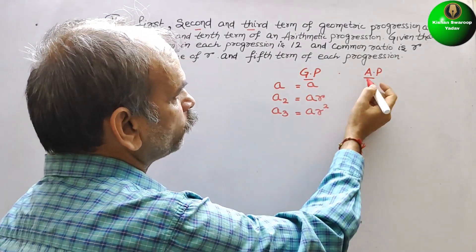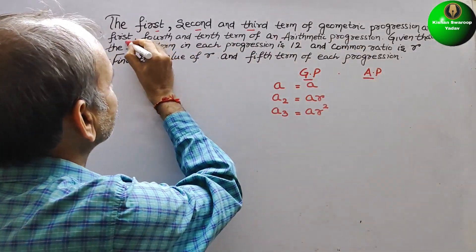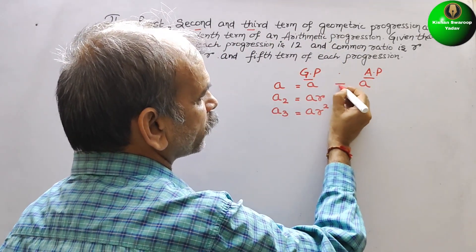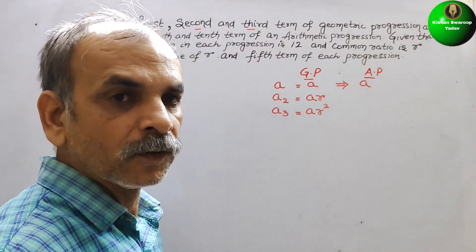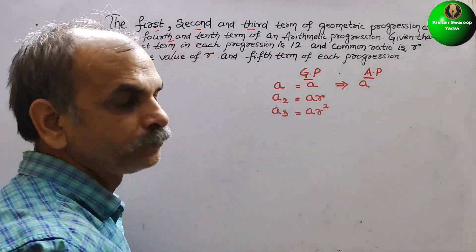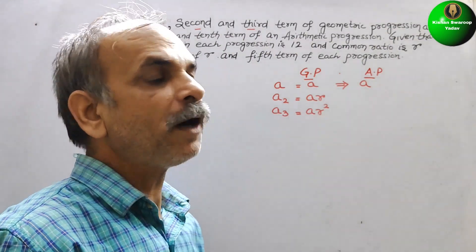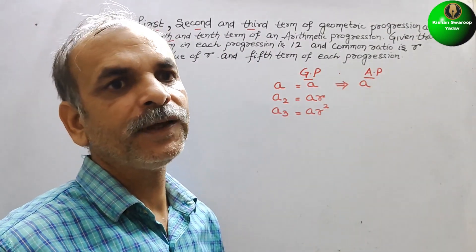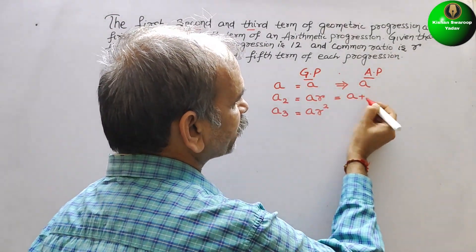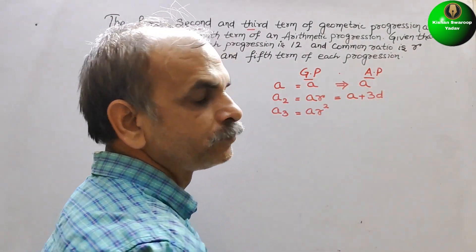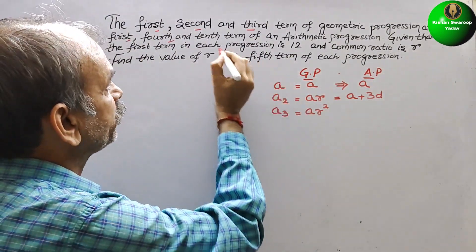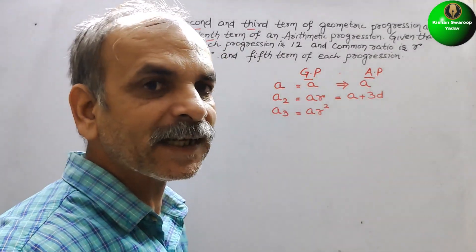These GP terms are equal to the corresponding AP terms. The first term A equals A. The second term of the GP corresponds to the fourth term of the AP, which is A plus 3D. And the third term of the GP equals the tenth term of the AP, which is A plus 9D.